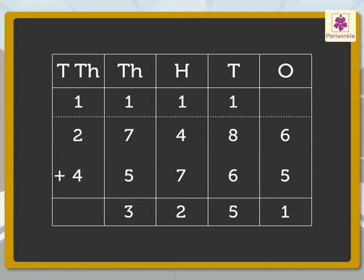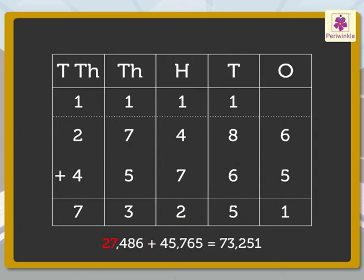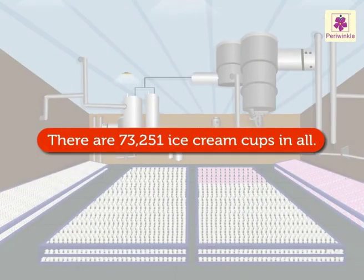Finally, add the numbers in the ten thousands column: 1, 2 and 4, and we get 7, which we write in the ten thousands column. Hence, we get the number 73,251. We say the sum of 27,486 and 45,765 is 73,251. Thus, there are 73,251 ice cream cups in all in this section.